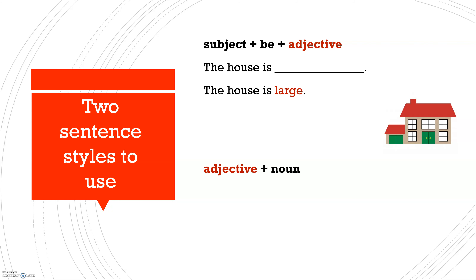The second style is to put the adjective before the noun, or in front of the noun, and you can put this in any part of the sentence. So as an example: 'It is a large house.' I'm just putting 'large' in front of or before the noun.